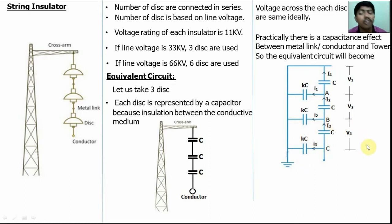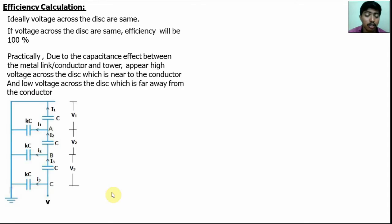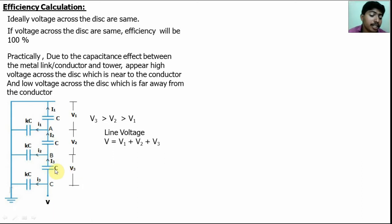Due to the shunt capacitance effect, the voltage across each disk is not the same. Ideally, the voltage across each disk would be equal because there is no shunt capacitance. But practically, due to the shunt capacitance effect, the voltage across the disk nearest to the conductor is much higher than disks far away. So V3 is much higher than V2 and V1. The line voltage V equals V1 plus V2 plus V3.